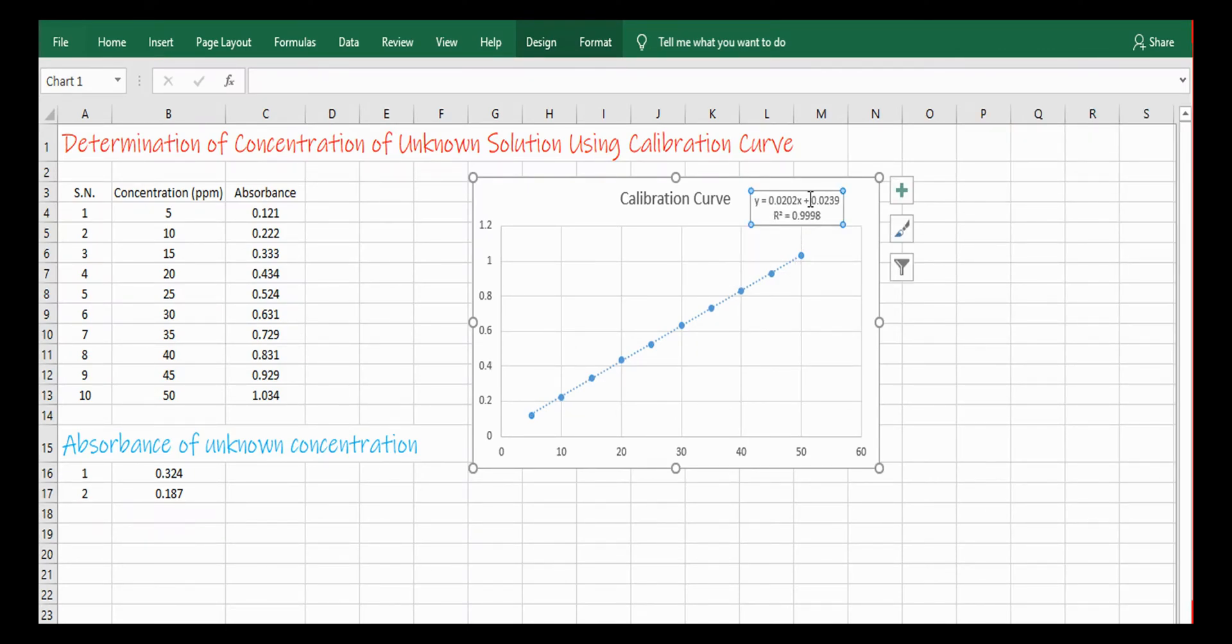You will see the equation in the form of y equals mx plus c. Here I have two absorbance values of unknown concentration. I have obtained this from spectrophotometer. To find the concentration of this unknown solution,